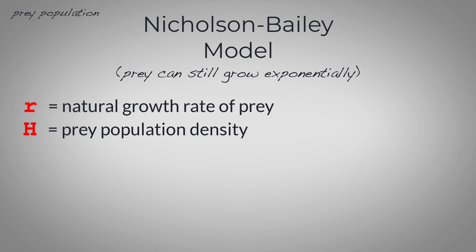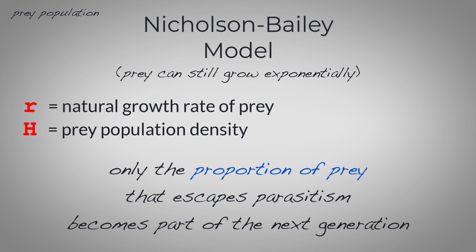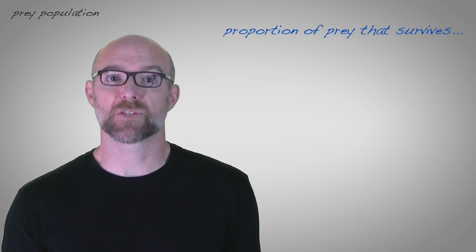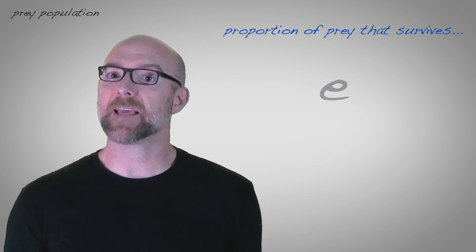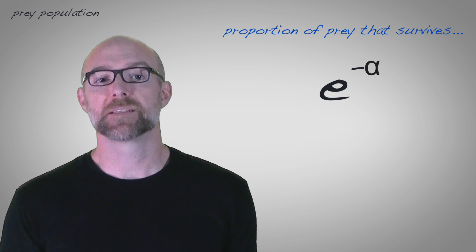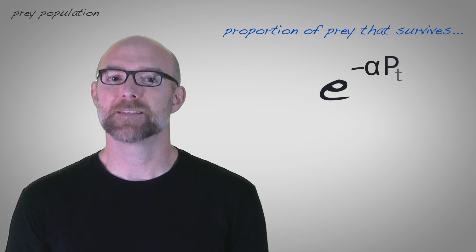Then we need a variable that accounts for the fact that not all of the prey in a given generation will actually survive and become part of the subsequent generation. Some of the prey get eaten, right? So the Nicholson-Bailey model adjusts for this. Only the proportion of prey that escapes parasitism will become part of the next generation. The proportion of prey that survives is represented by e to the negative alpha times P at time t.